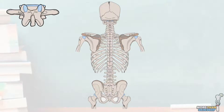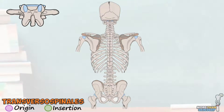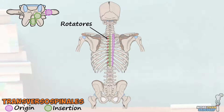Let's start with the deepest muscles of them all, the transversospinalis. These three muscles get their collective name as they're associated mostly with the transverse and spinous processes of the vertebral column. Present along the entirety of the vertebral column but best developed in the thoracic region are the numerous rotatores muscles. These short muscles originate from the transverse processes of the vertebral bodies and insert into the inferior parts of the spinous processes and laminae of the vertebrae immediately above. They are named after their primary function, which is to assist in rotation of the trunk. They also aid a little in proprioception and stabilisation of the spine.